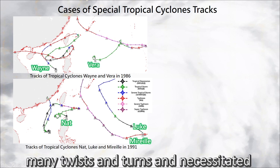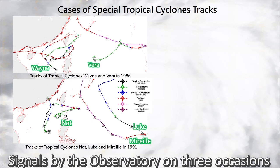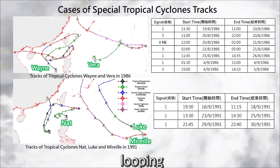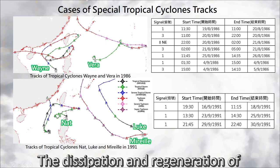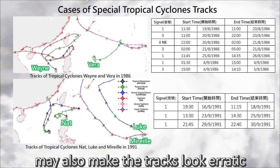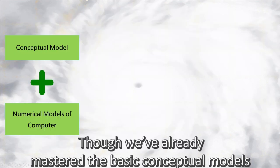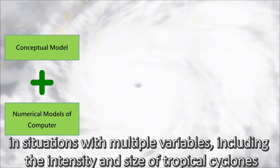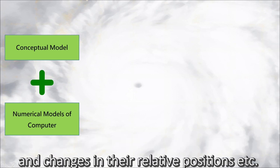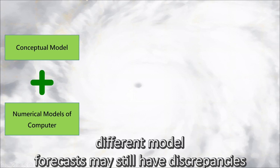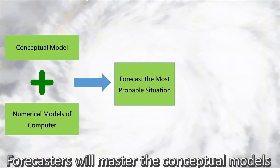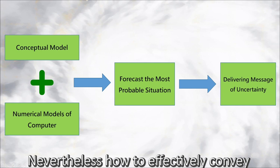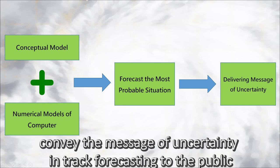Besides, when tropical cyclones are under a weak steering flow, they often undertake erratic tracks such as stalling, looping, and others. The dissipation and regeneration of small-sized tropical cyclones within a monsoon gyre may also make the tracks look erratic. Though we've already mastered the basic conceptual models, numerical models on the computer can also generally handle the tropical cyclone interaction processes in situations with multiple variables — including the intensity and size of tropical cyclones and changes in their relative positions — yet different model forecasts may still have discrepancies. Forecasters will master the conceptual models and understand the limitations of these models to predict the most probable situation. Nevertheless, how to effectively convey the message of uncertainty in track forecasting to the public is another lesson to be learned.